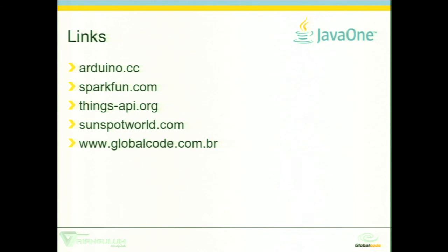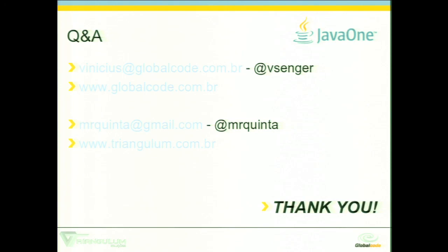Here are some links: Arduino, SparkFun, Things API, Sunspot. My company is TriangulumSolutions.com.br. If you want to make contact, just drop a line and we can give you more information and pieces of code. Once we start the Things API project publicly, we'll be looking for help. If you already work with open source hardware and Arduino stuff, Things API is a nice project for you to use and collaborate on. We have about five more minutes for Q&A.